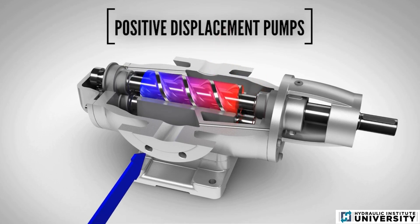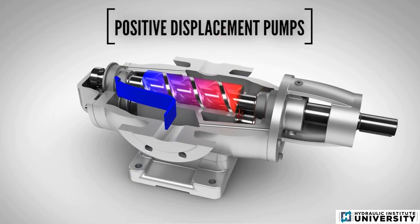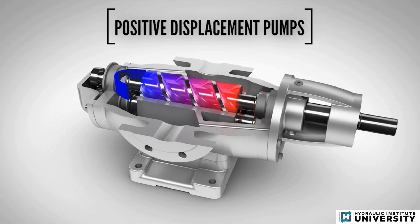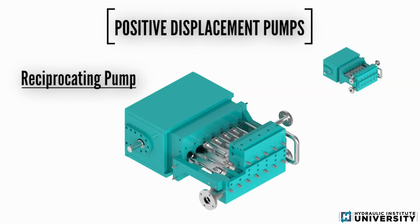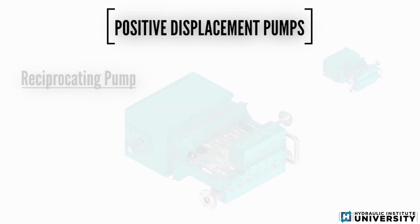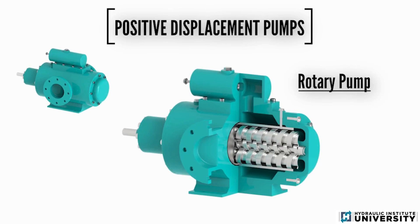Here are some basic images of the two major categories of positive displacement pumps. First, the reciprocating pump, capable of producing the highest pressure and dosing small, yet precise, quantities of fluid. Secondly, the rotary pump, which also handles high pressures but can deliver larger volumes than reciprocating pumps.